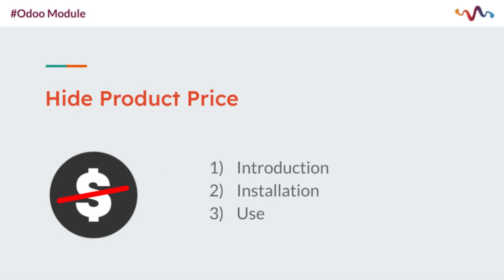Hey there, welcome back to the Salon for Tech. In this tutorial video, we will have a look into the Hide Product Price Order module. This module addresses the issue of displaying product price to users who have not logged into the system. By implementing this module, the price of products will be hidden from non-registered users, creating a controlled user experience.